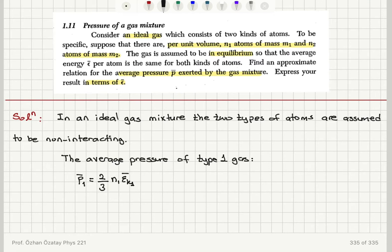And similarly, we can write for the average pressure exerted by type 2 atoms. So average pressure of type 2 gas will be similarly P2 bar equals two-thirds number of gas molecules per volume N2 times kinetic energy of second type Epsilon K2 bar.